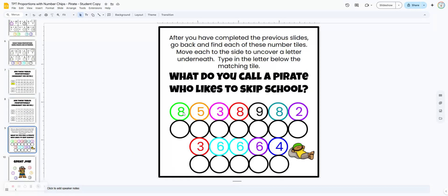When they get down to the final slide they have all of these colored chips. They have to go through the previous slides. When they're going to look for a green 8 that looks just like this, when they find it they're going to move it to the side. There will be a letter underneath and they're going to type that letter in. They're going to do that same thing with all of these different numbers. So you can see these two are going to end up being the same letter. If they've done all of these correctly they will solve the riddle.